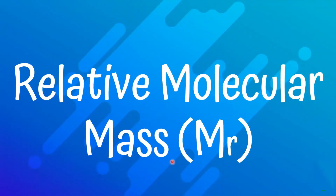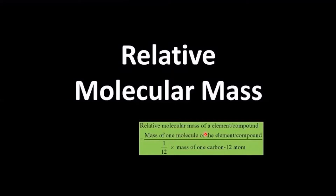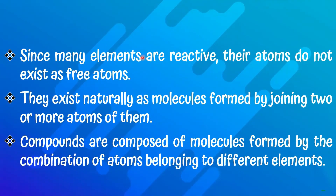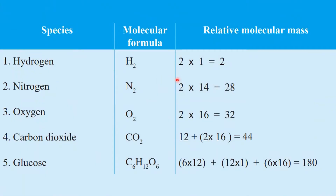Relative molecular mass — the symbol for relative molecular mass is Mr. The relative molecular mass is the mass of one molecule of the element or compound divided by one-twelfth of the mass of one carbon-12 atom. Since many elements are reactive, their atoms exist naturally as molecules formed by joining two or more atoms. We have a chart showing some relative molecular masses: hydrogen is 2, nitrogen 28, oxygen 32, carbon dioxide 44, and glucose 180.